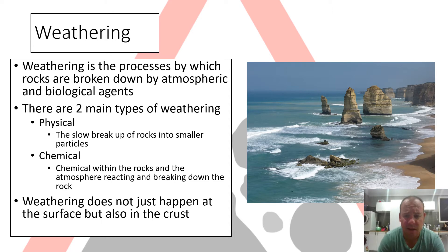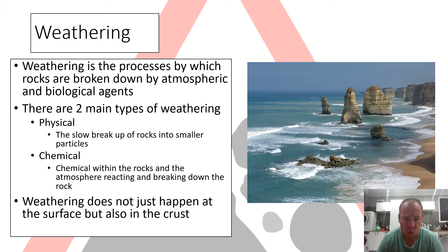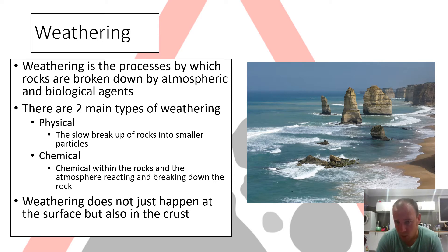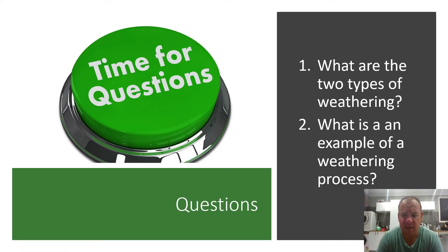Weathering is the process of breaking down rocks, and there are two main types: physical and chemical. Physical weathering is the slow breakup of rocks into small particles by the force of water or other rocks. Chemical weathering involves water and substances in the atmosphere reacting with minerals, breaking down rocks. Weathering doesn't just happen at the surface but also underneath in the crust. The 12 Apostles is a good example of weathering.